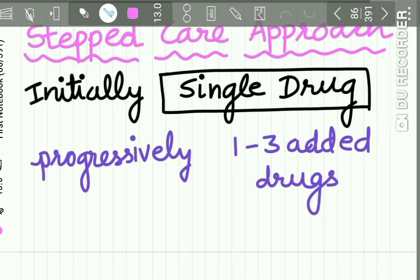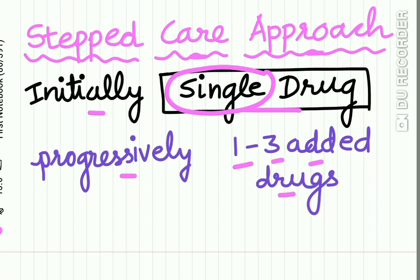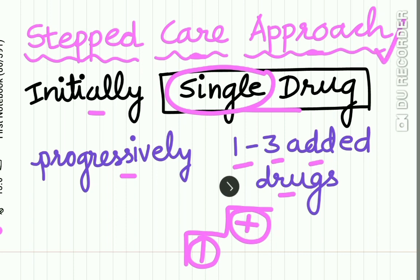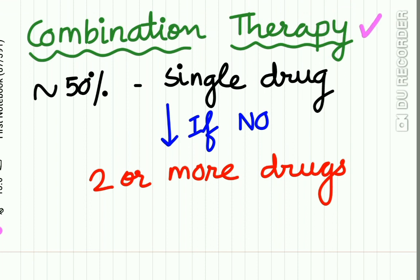Let us study the pharmacological measures of hypertension in detail. First is the stepped care approach. In this approach, initially a single dose of a single drug is used to control hypertension. If hypertension is not controlled, progressively one to three drugs are added — step by step. First one drug is used, then drugs are added; this is called the stepped care approach.